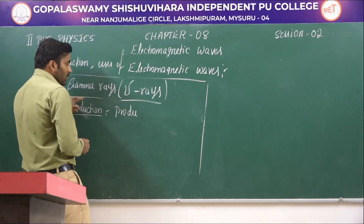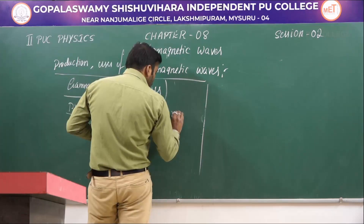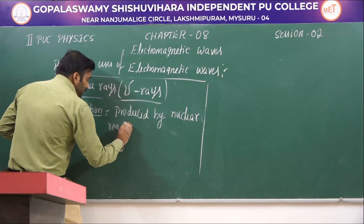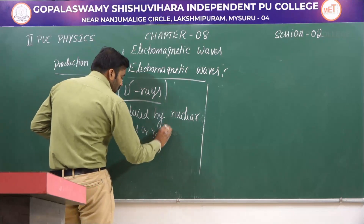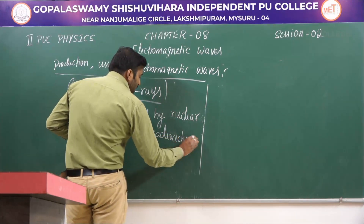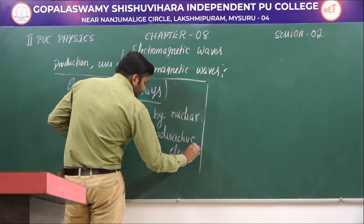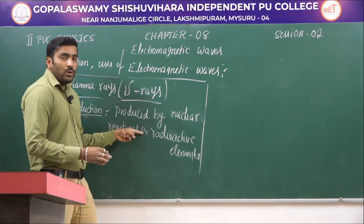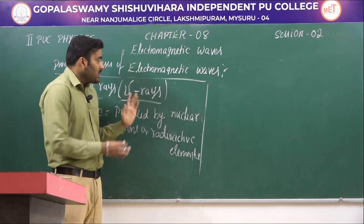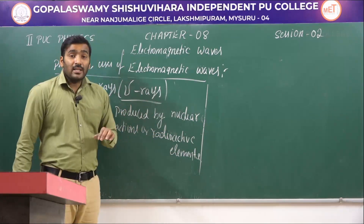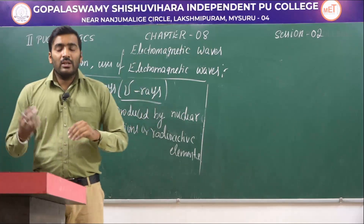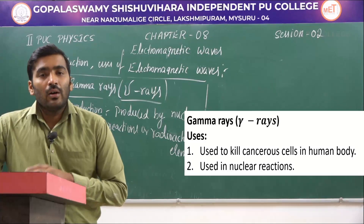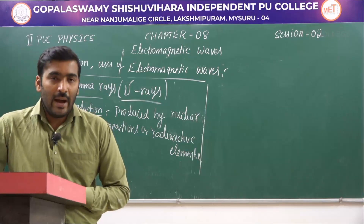Gamma rays are produced by nuclear reactions and also by some radioactive elements. The uses of gamma rays include killing cancerous cells and detecting cracks and flaws in metals.